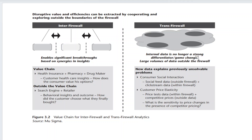For trans firewall analytics, internal data is no longer a strong differentiator or game changer. Large volumes of data lie outside the firewalls too. New data helps explain previously unsolvable problems: consumer social interaction is social feed data outside the firewalls, plus click stream data within the firewalls showing how many clicks we get. Customer price elasticity involves testing prices within the firewalls — for example, products priced at 50, 99, 199, 299, or 399 rupees — and then analyzing competitive prices outside.